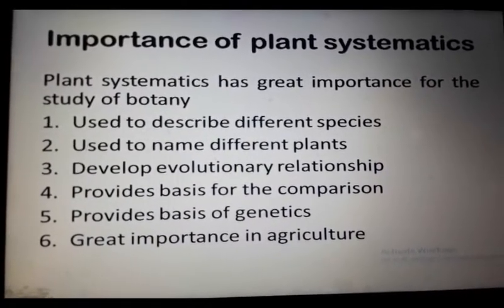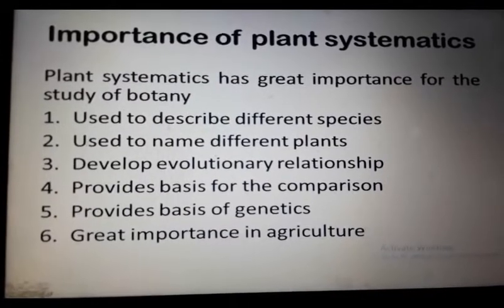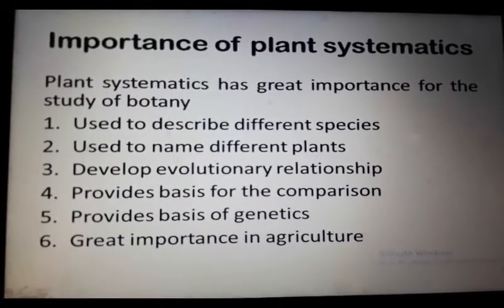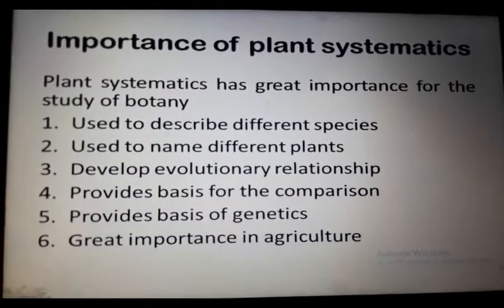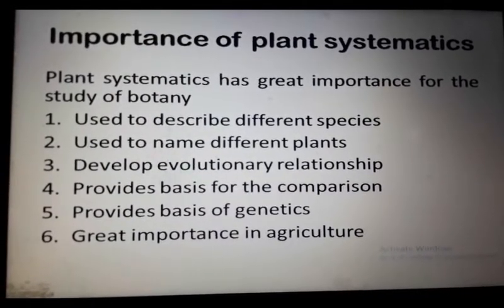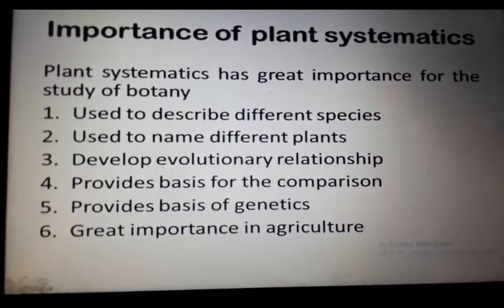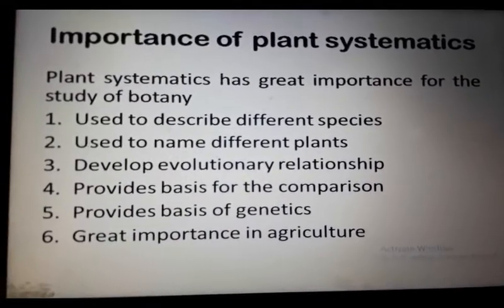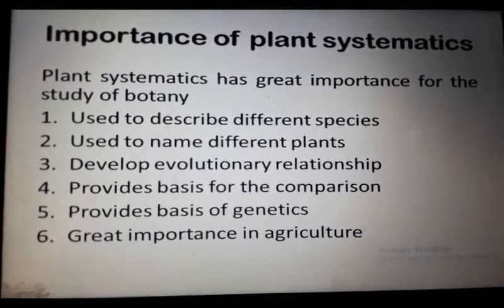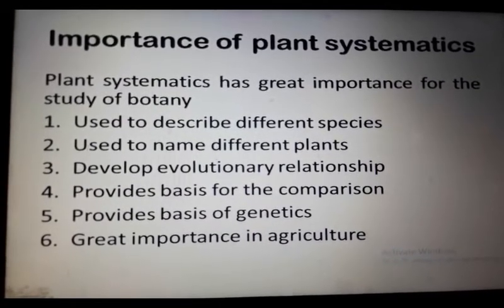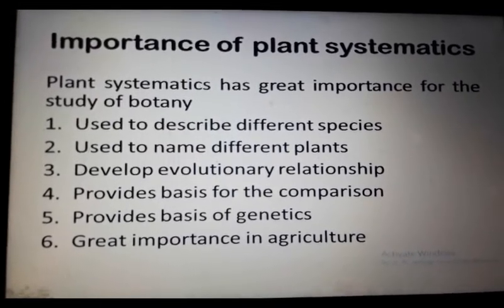This concludes the introduction to plant systematics. Important terms to remember include: what is systematics, what are affinities, the definition of plant taxonomy, the factors on which plant taxonomy is based, and the importance, aims, and objectives of plant systematics. This completes the first lecture: Introduction to Plant Systematics.